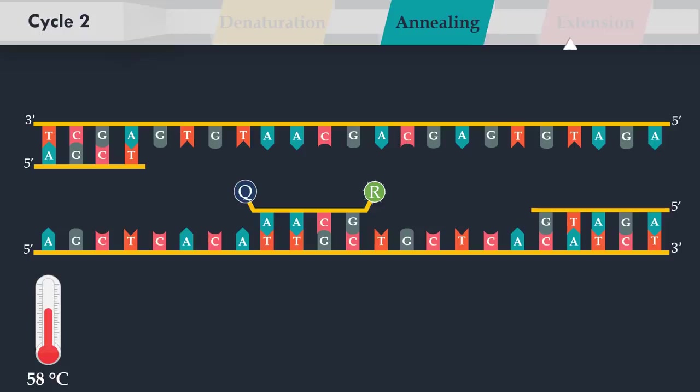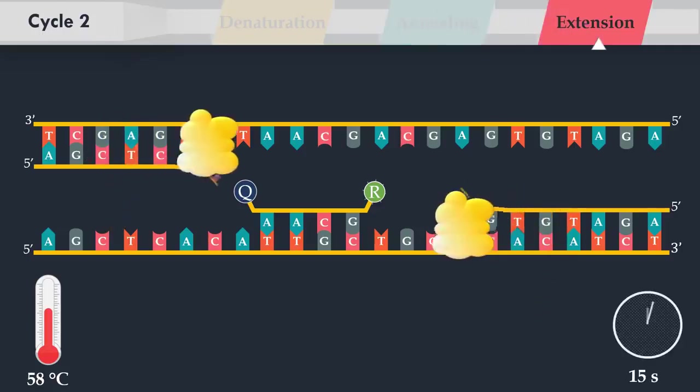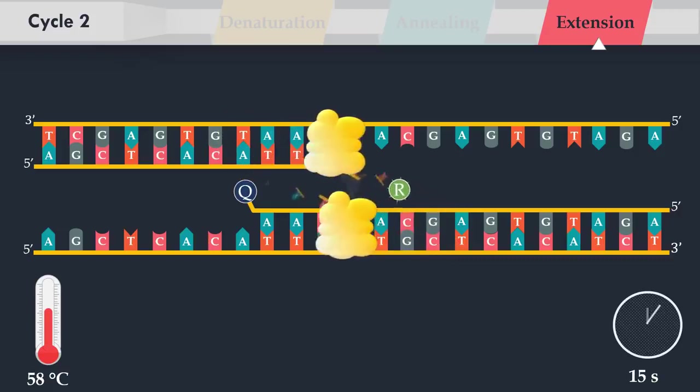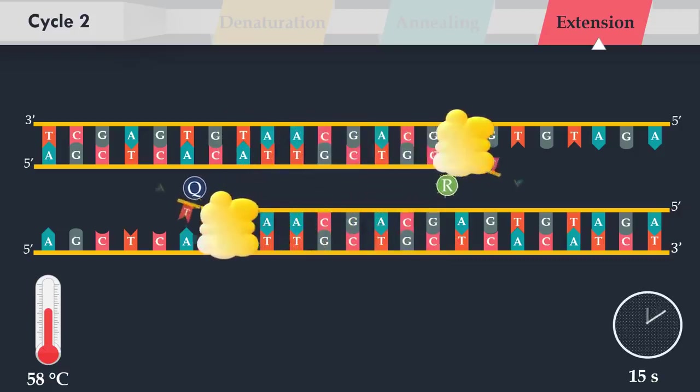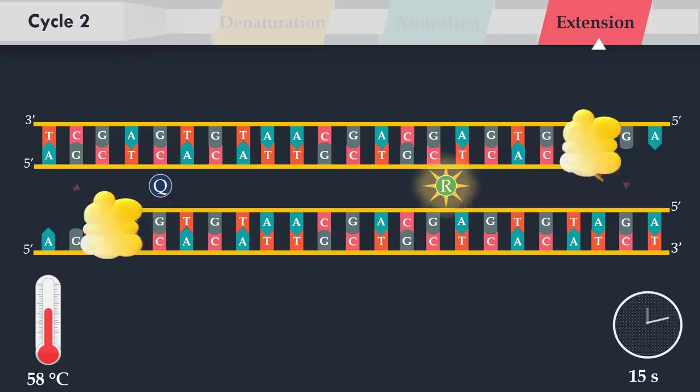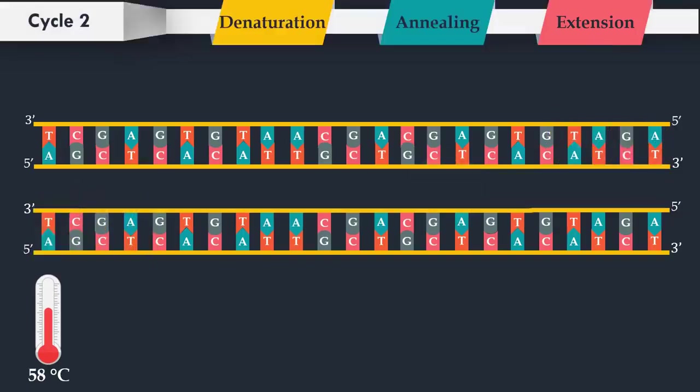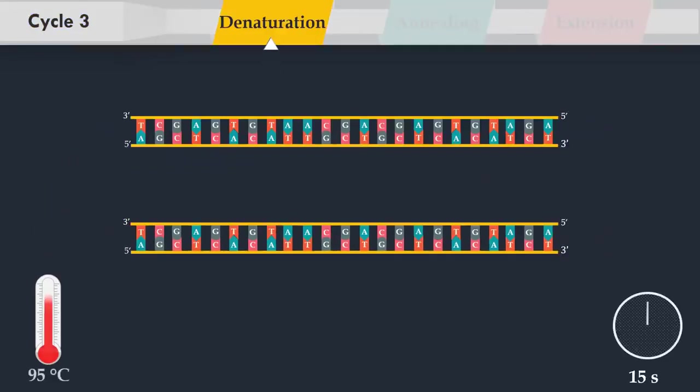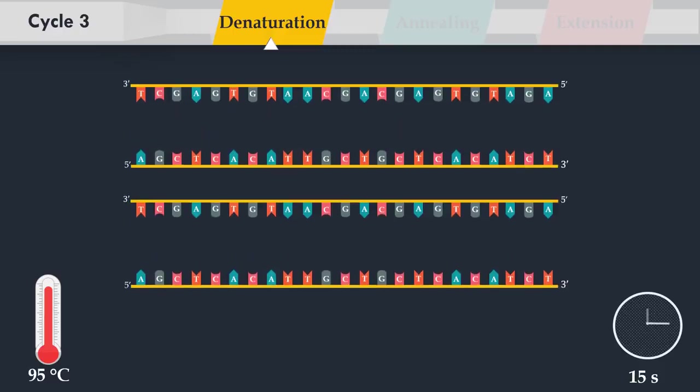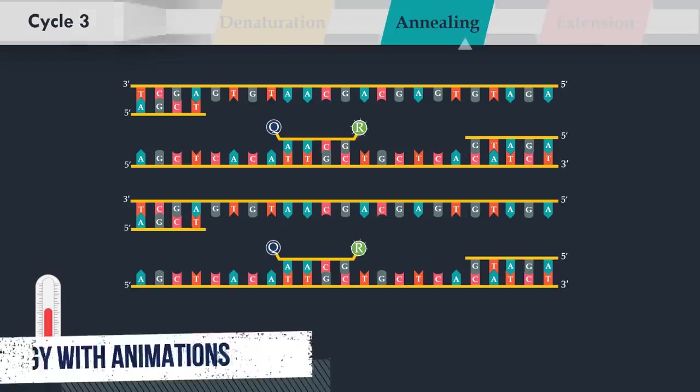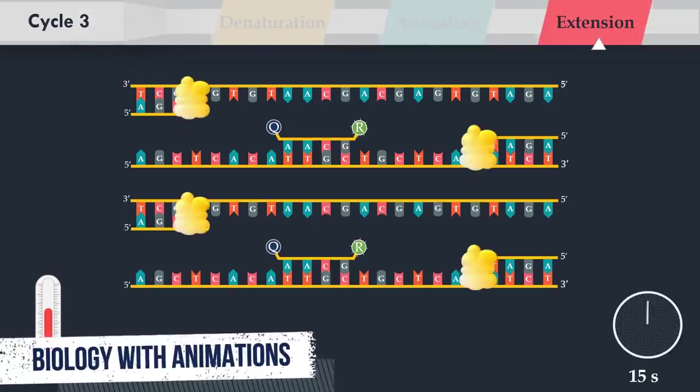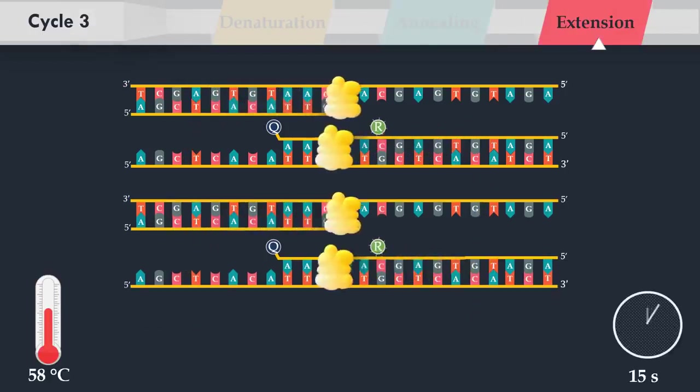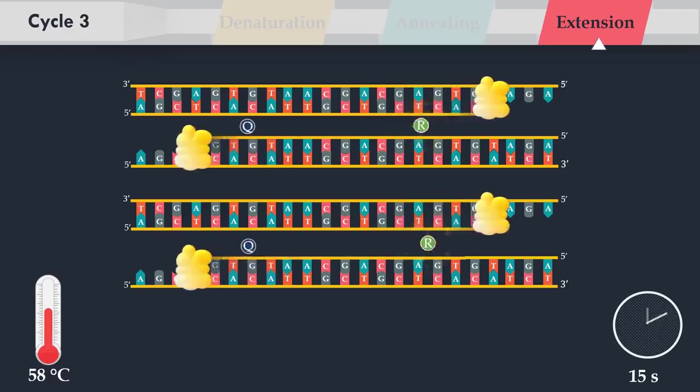In the extension step, DNA polymerase synthesizes new strands. When the polymerase reaches a Taqman probe, its endogenous 5' nuclease activity cleaves the probe, separating the dye from the quencher. With each cycle of PCR, more dye molecules are released, resulting in an increase in fluorescence intensity proportional to the amount of amplicon synthesized. This method allows the estimation of the amount of a given sequence present in a sample.